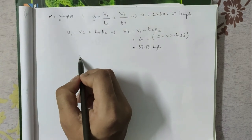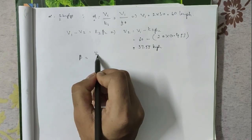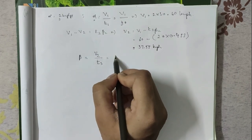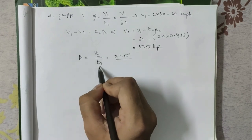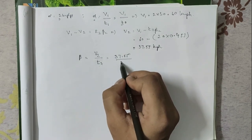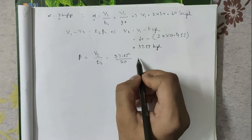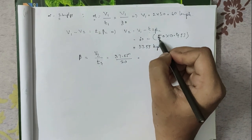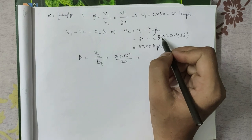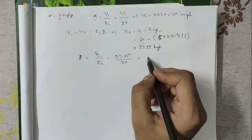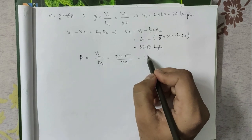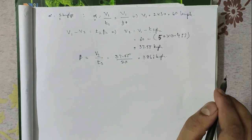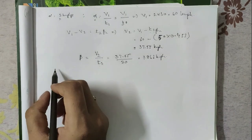Now we find the braking retardation β. β = V2 / T3, where T3 is the braking time of 20 seconds. So β = 37.55 / 20 = 1.878 kmphps. With all these values known, we can now calculate the distances for each phase.